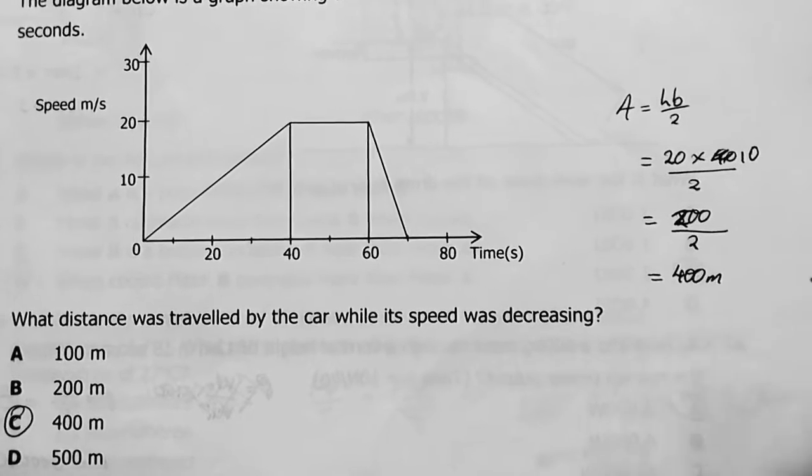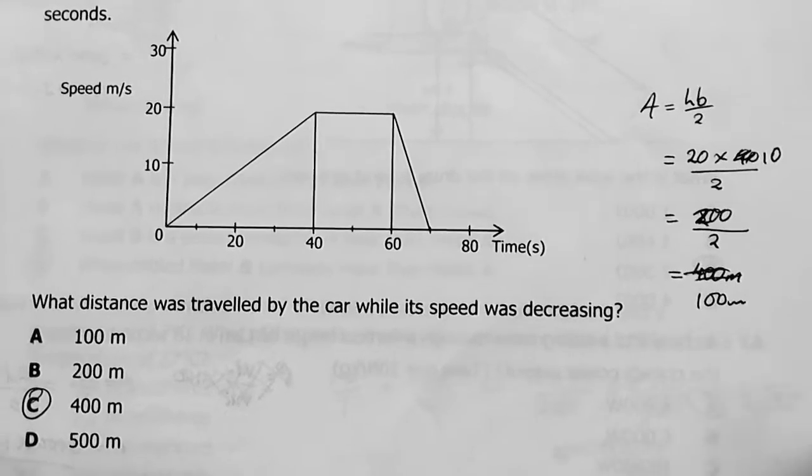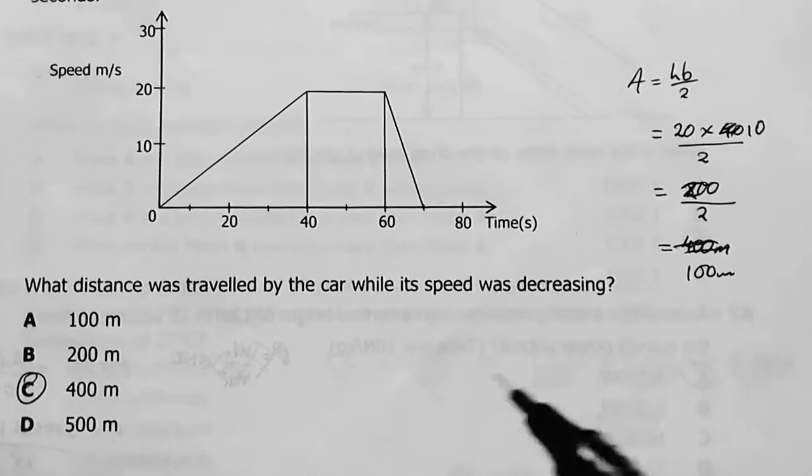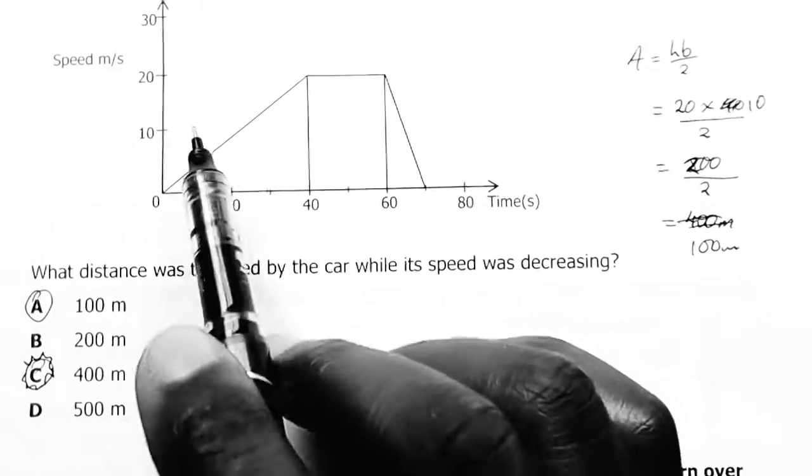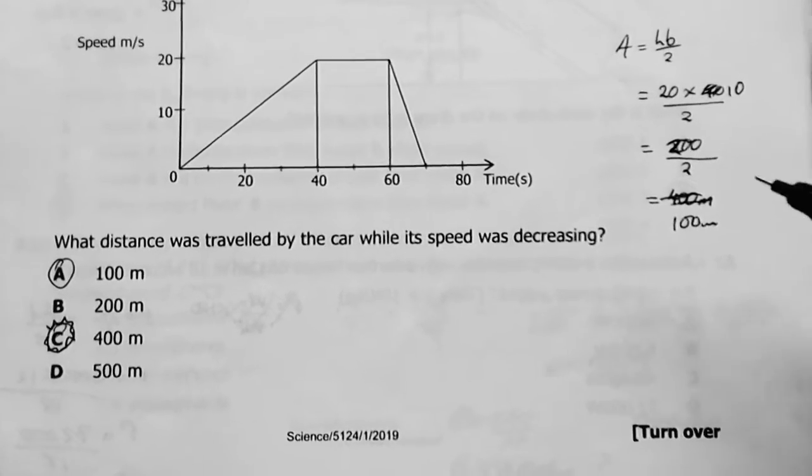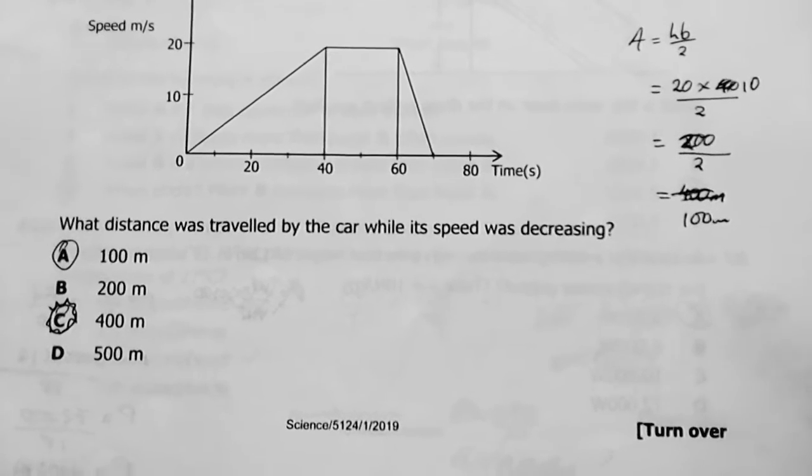10 times 20 is 200, 200 over 2 is actually 100 meters. So my answer there is 100, meaning the answer is A, not C. I think I took the first triangle; I didn't look properly.